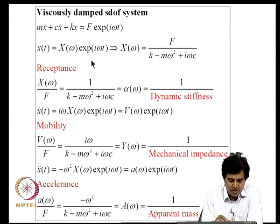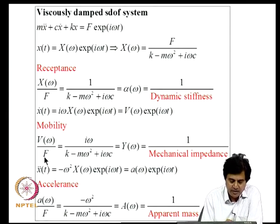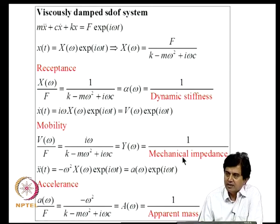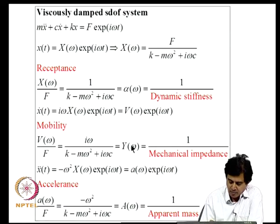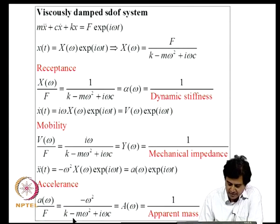Differentiating the displacement with respect to time gives velocity X-dot = i·omega·X(omega), where V(omega) = i·omega·X(omega) is the Fourier amplitude of velocity. Velocity per unit force is known as mobility, denoted Y(omega). The reciprocal of mobility — force per unit velocity — is known as mechanical impedance. Differentiating again gives acceleration A(omega) = -omega^2·X(omega); acceleration per unit force is called accelerance, and its reciprocal is known as apparent mass.